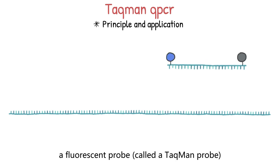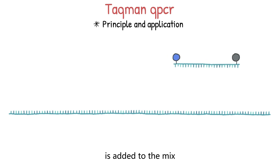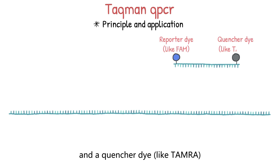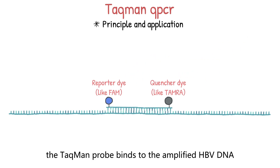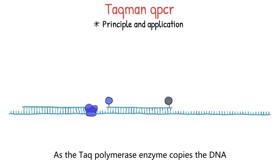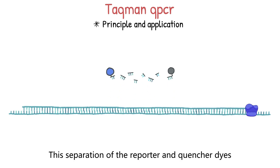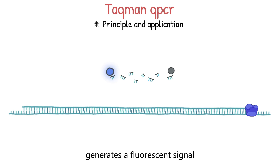Then a fluorescent probe called a TaqMan probe is added to the mix. This probe is labeled with a reporter dye, like FAM, and a quencher dye, like TAMRA. During the amplification process, the TaqMan probe binds to the amplified HPV DNA. As the Taq polymerase enzyme copies the DNA, it also cleaves the TaqMan probe.